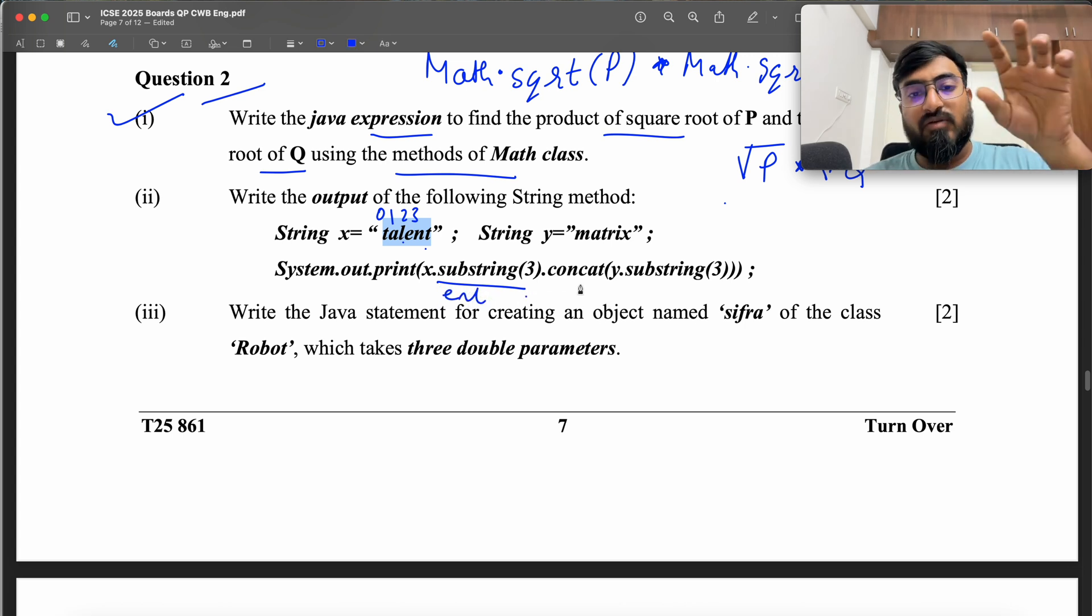Concat, you have to means join the two strings and the result is a new string. y.substring(3), 0, 1, 2, 3. It is going to be this part, r i x. So output is going to be E and T and r i x. This is your second part.